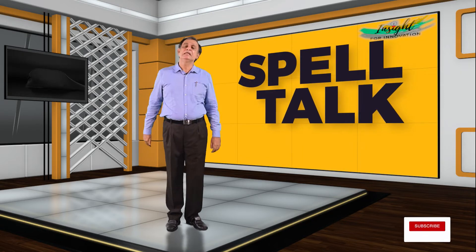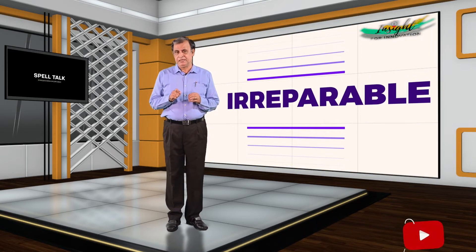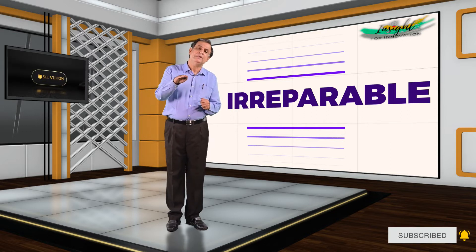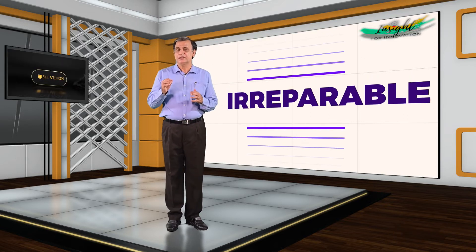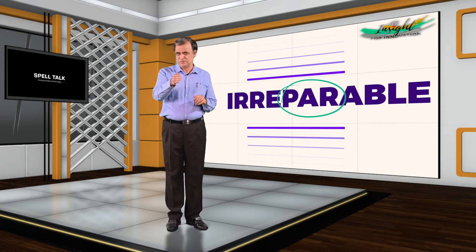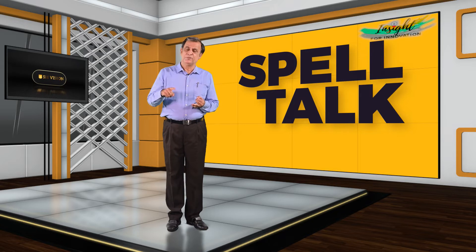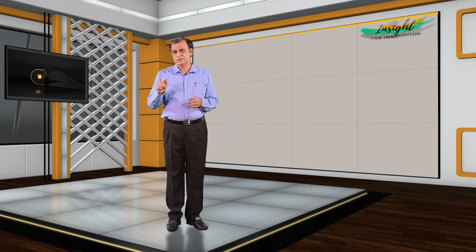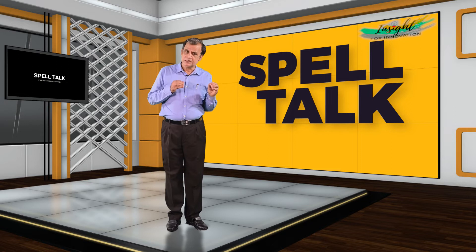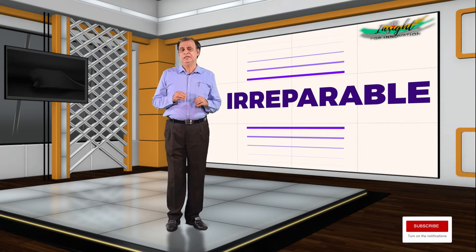We have another word: irreparable. The spelling is I-R-R-E-P-A-R-A-B-L-E. Irreparable means too bad to be repaired. The tricky area in the word is P-A-R. Consider similar words: in 'pair' and 'repair', after P-A there is an I. But in irreparable there is no I after P-A — that is the point to note most carefully. The spelling once more: I-R-R-E-P-A-R-A-B-L-E — irreparable.